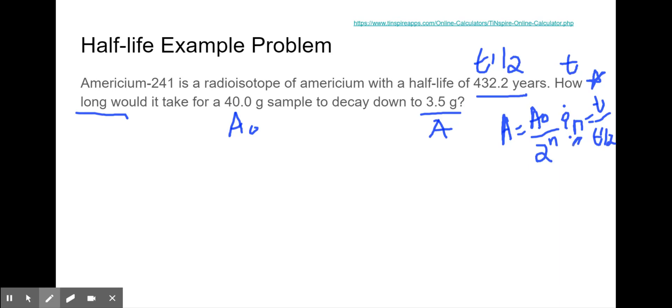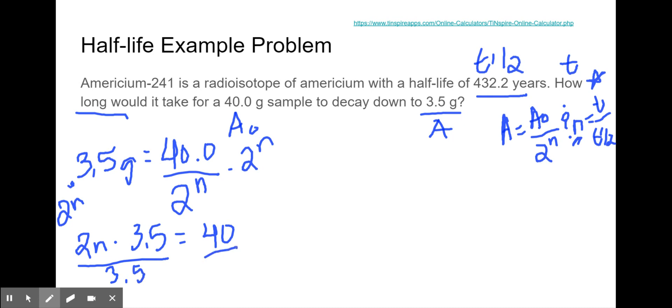I know A equals 3.5 grams, which equals 40 divided by 2 to the power of N. Multiply both sides by 2 to the power of N to get that out of the denominator, which gives 2 to the N times 3.5 equals 40. Divide by 3.5 on both sides to get N by itself.